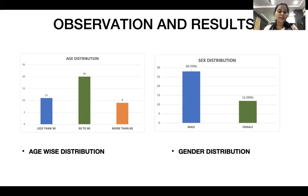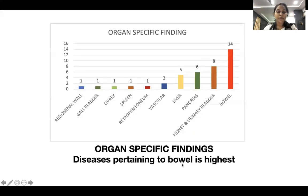Observations and results: regarding age-wise distribution, 11 cases were seen in the less-than-30 age group, 20 cases in the 30 to 60 years age group, and 9 cases in the more-than-60 age group. Male preponderance was seen in gender distribution. Diseases pertaining to organ-specific findings are depicted within the graph, and diseases pertaining to the bowel were highest.